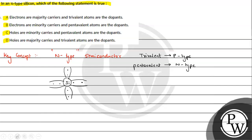We will add pentavalent impurity — let's consider phosphorus. When phosphorus is added, it shares 4 electrons to form 4 covalent bonds with neighboring silicon atoms. However, one electron still remains unpaired — as shown here. So when we add many such impurities, a large number of free electrons become available.